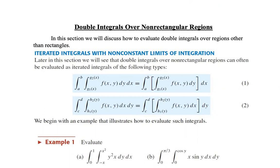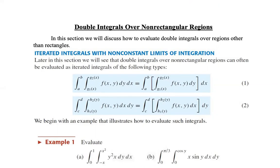The first type is the integral from a to b of the integral from g1(x) to g2(x) of f(x,y) dy dx — integrating the function f(x,y) with respect to y with limits from a function g1(x) to another function g2(x), giving a function of x, which we then integrate with respect to x from a to b.